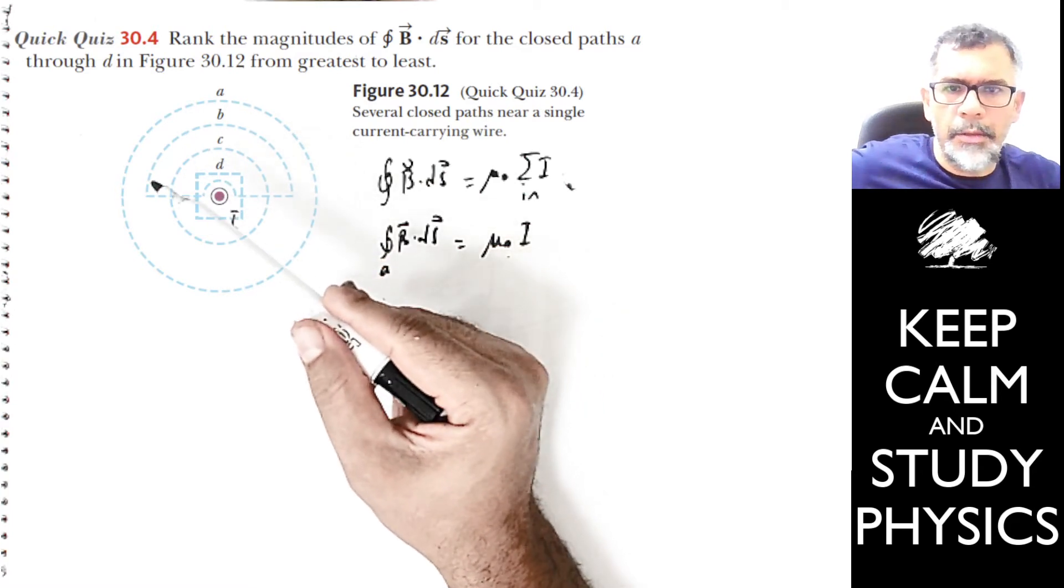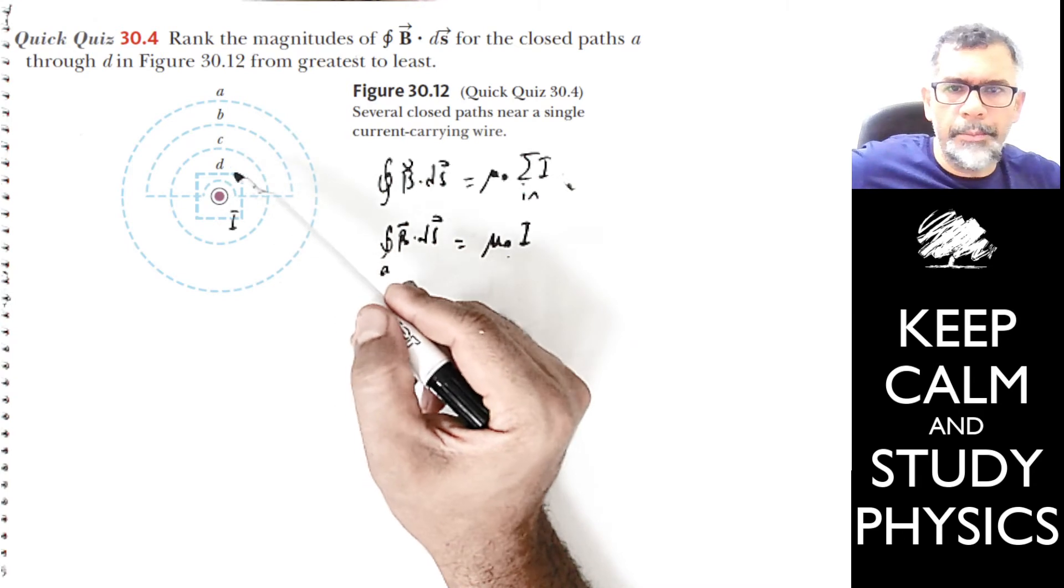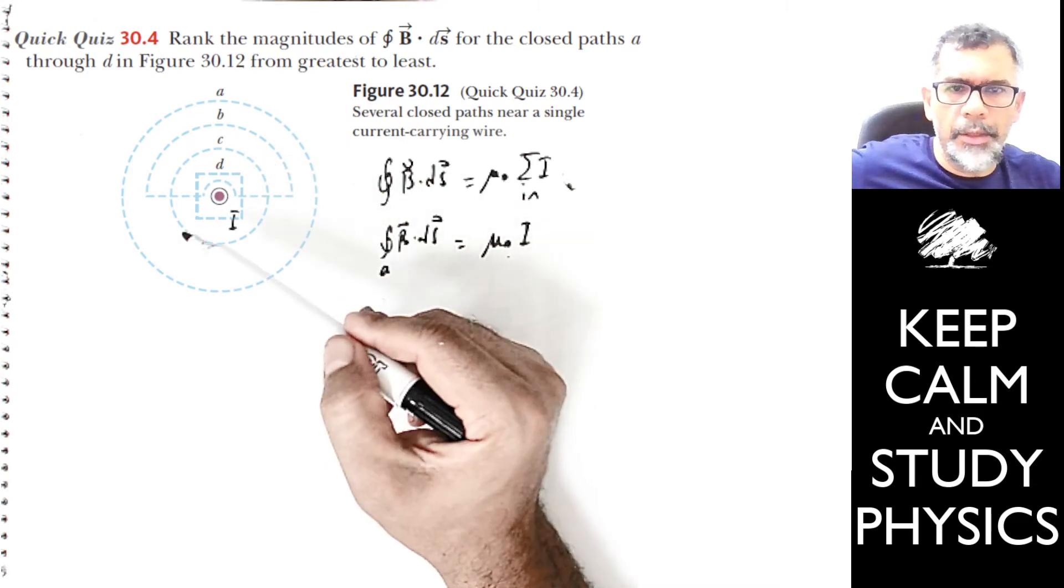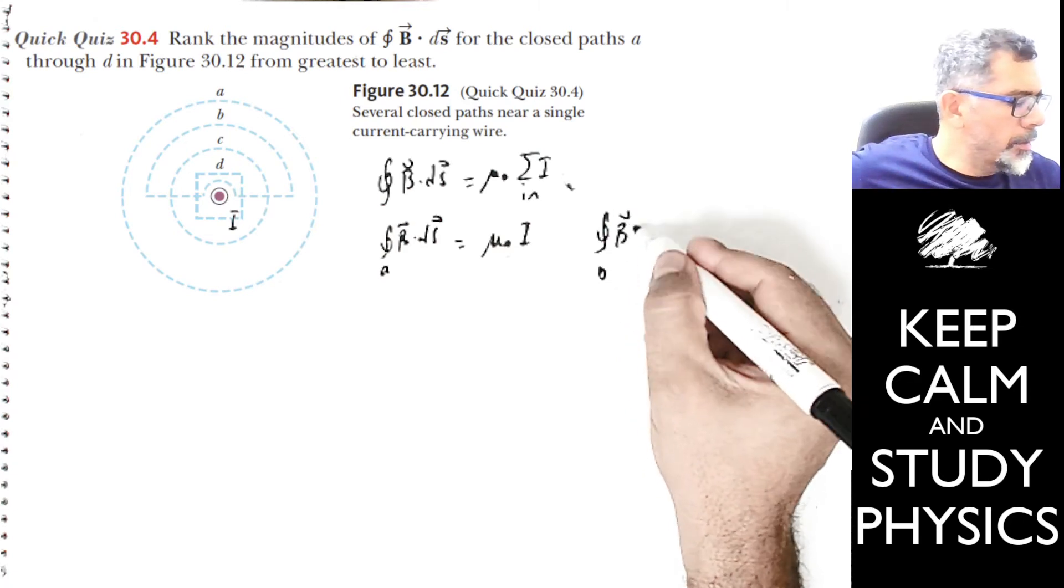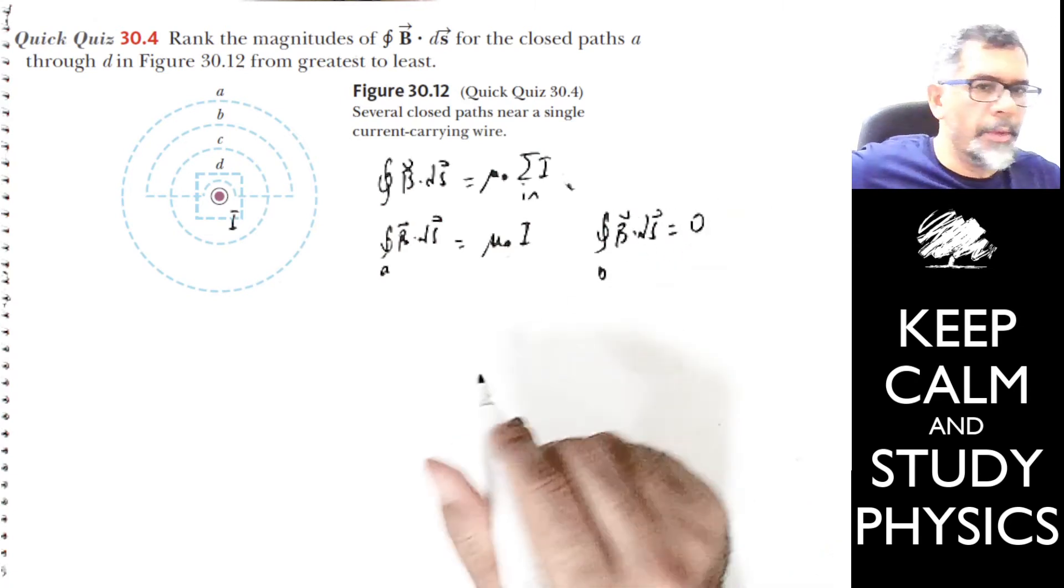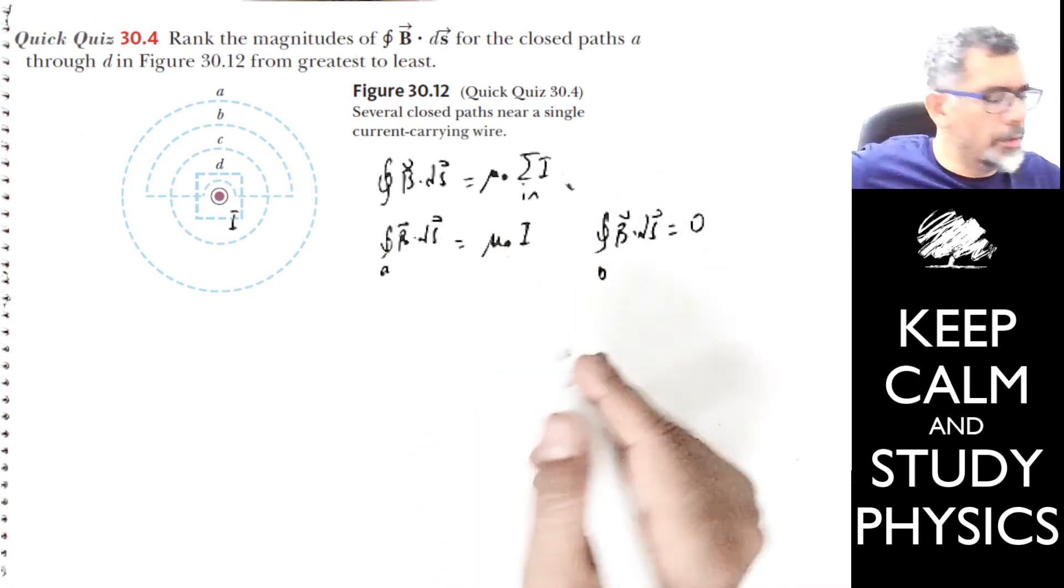That means closed path B contains no currents. If there are no currents, then the result is zero because the current is zero.